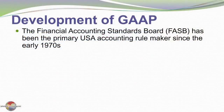Currently, the Financial Accounting Standards Board is the primary rulemaking body within the United States of America. They've held that role since the early 1970s. The FASB is a private sector body entrusted and in charge with setting the specific accounting standards that govern the practice of accounting.